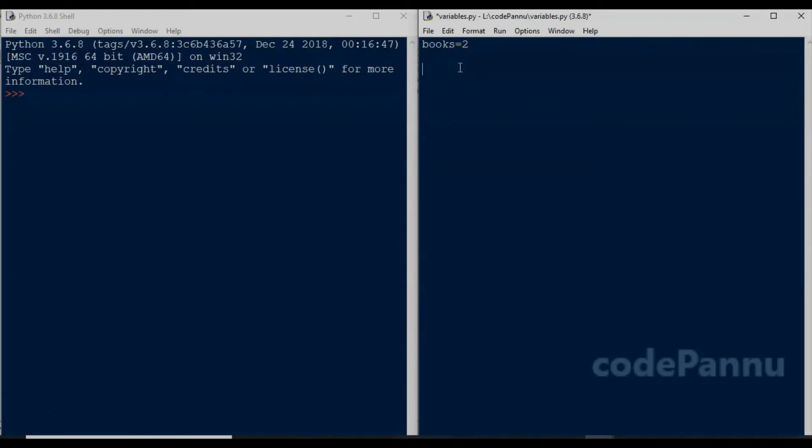Since we know how to use the print statement, let us print the variable and see. So we write print, open the bracket, close the bracket, books. Save the file and run the code. 2 is printed as output.